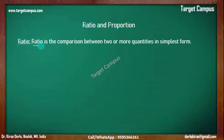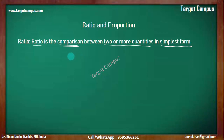Ratio is a comparison between two or more quantities in simplest form — the simplest possible form.